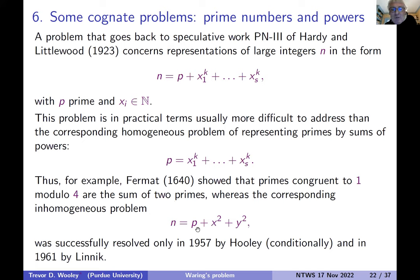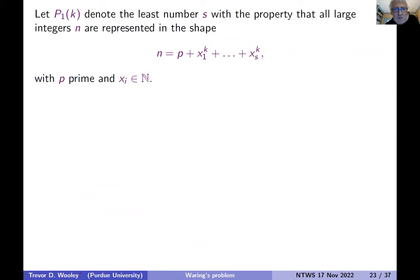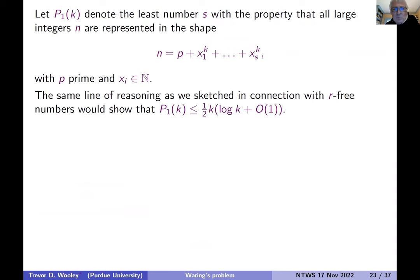The corresponding inhomogeneous problem, where you try to represent n as a prime plus two squares, this was tackled only 60 years ago, basically, by Hooley and by Yun. So it's a much harder problem. So what about the general situation?